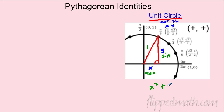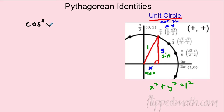For the Pythagorean theorem it's a² + b² = c². Instead of using x and y, can we use cosine and sine? Sure. So here is the Pythagorean identity: cosine squared plus sine squared equals one.